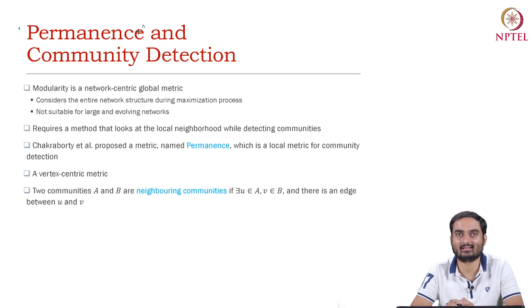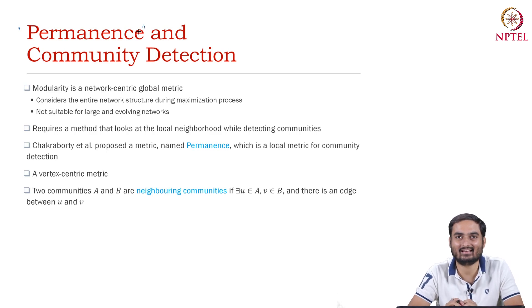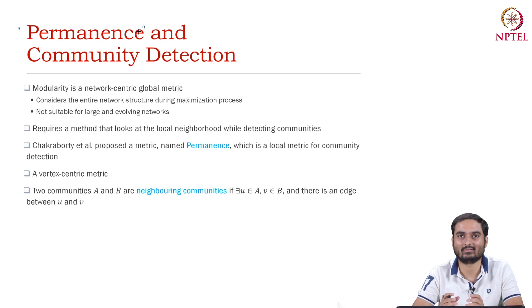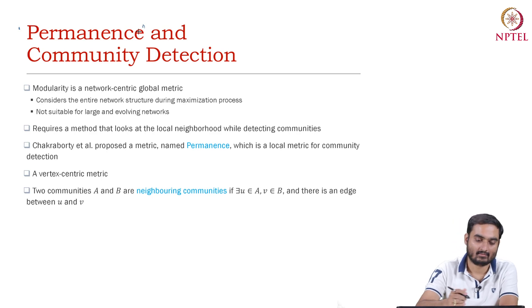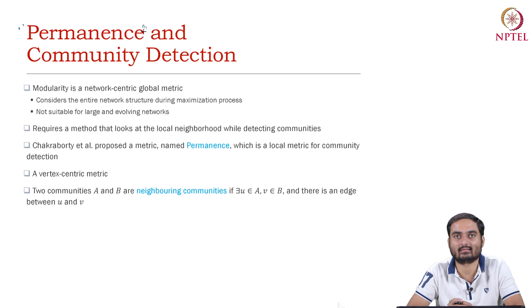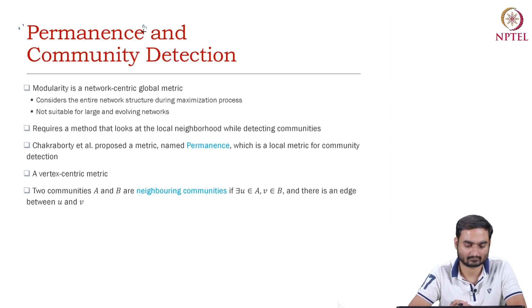I mentioned earlier that this is the beauty of this particular area — you can define your own way to quantify community structure, but you also need to show that your method is better, that your metric makes more sense. We defined something called permanence. Permanence is a metric like modularity, but it has certain advantages.